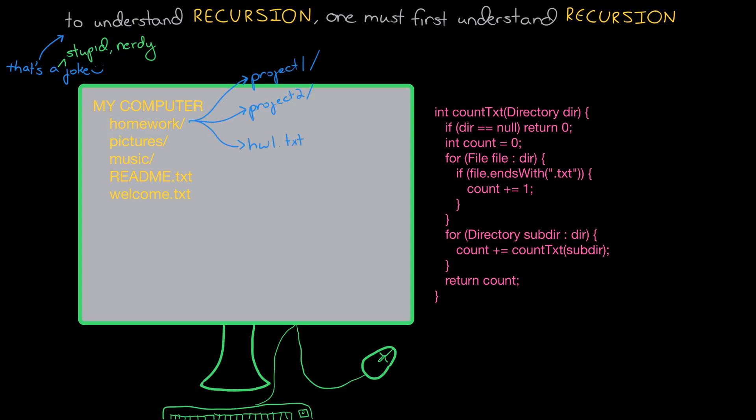And homework says well let's see I have one .txt file but now let me go check with project one and project two. So we go to project one we do the same thing and eventually if we do this enough times we'll go through all of our folders and all of their subfolders until we get through all of the files and get our final answer which in this case is eight.